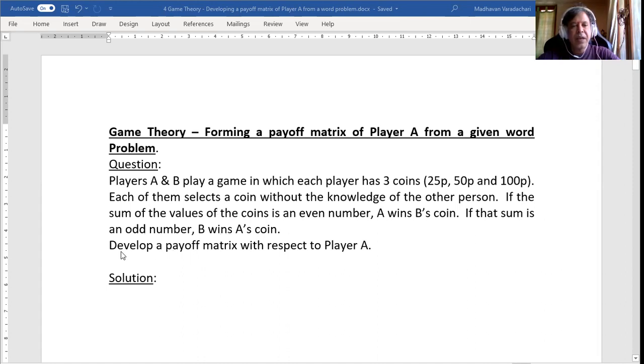Develop a payoff matrix with respect to Player A. So here we may notice each player has got these three coins. That means both of them are having the same three strategies. So these are considered to be the strategies. Both of them have got the same strategies, same count, same type of strategy, because both of them are having 25 paise, 50 paise, and 100 paise coin.